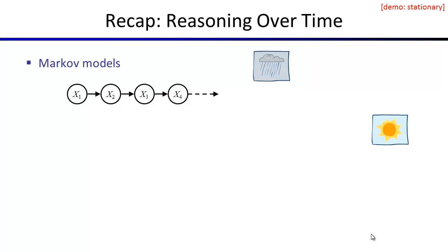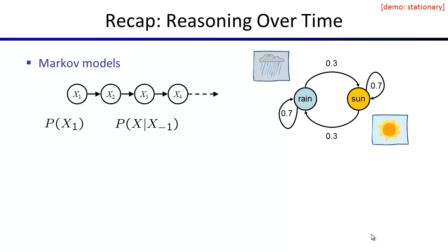Let's remember what we introduced last time with hidden Markov models. We first started off by talking about Markov models — nothing hidden yet. A Markov model is simply a time-replicated Bayes net where the Bayes net has just a single variable at each time step. The only conditional probabilities in here are how the variable X at one time depends on X at the previous time. To specify a Markov model, you give the initial state — the marginal probability of X1 — and more importantly, how the X's evolve over time. These are called transition probabilities or dynamics models.